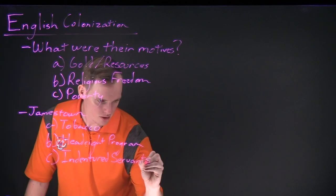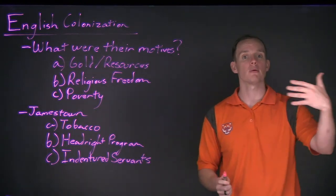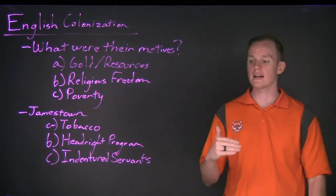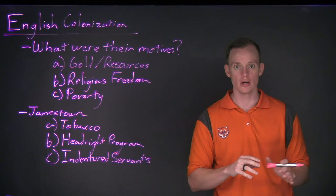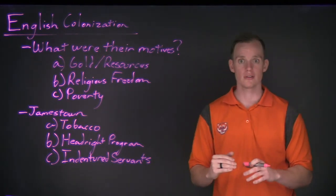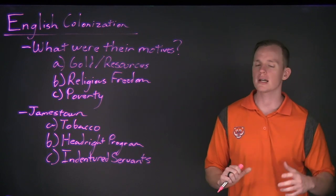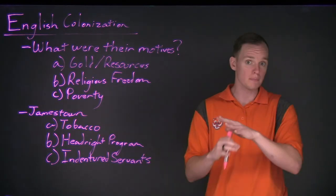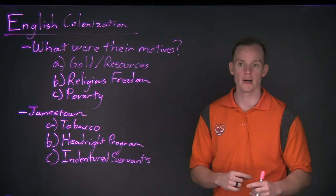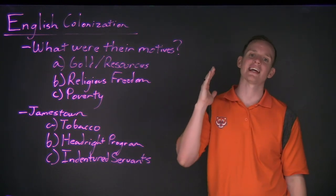On top of that, if you brought servants, you could include them in the deal — an additional 50 acres per servant. This also introduced the indentured servant system. Most indentured servants were relatively poor Englishmen. With the headright program in place, wealthier individuals placed advertisements to recruit servants willing to travel to the New World, so they could accumulate those additional acres. Many poverty-stricken individuals in England took advantage of this — their ticket to the New World was paid, offering a new opportunity at life.